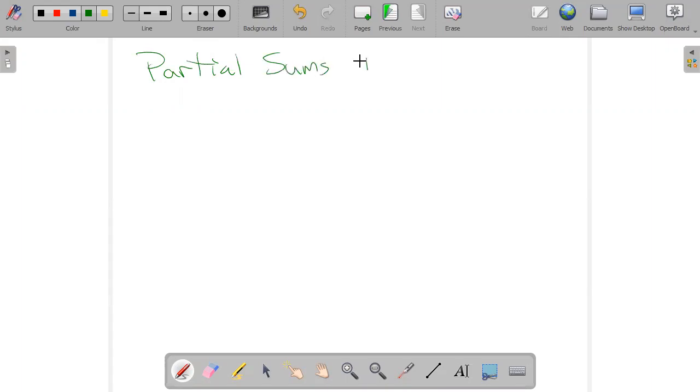So partial sums and their error. We're trying to find some sum, and let's just go with the example that we have.